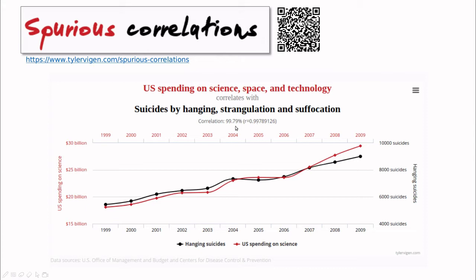That means that 99% of the variability of the number of suicides is correlated with US spending. Of course, this is crazy. And this is one of the main messages of this video: correlation is a measure of how one variable is explained by the other — but not causally, just statistically.